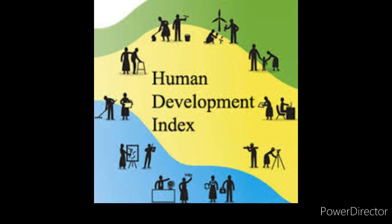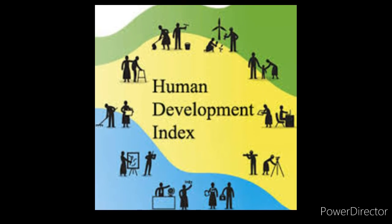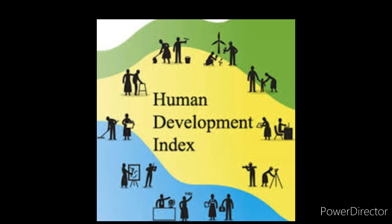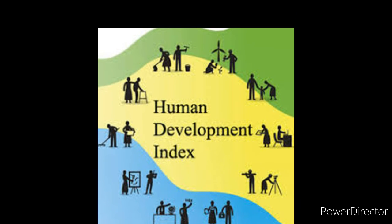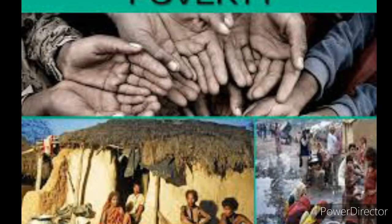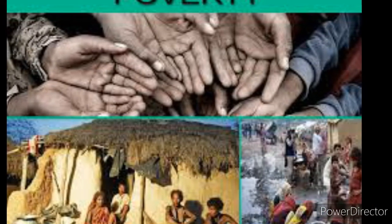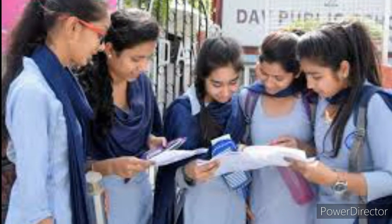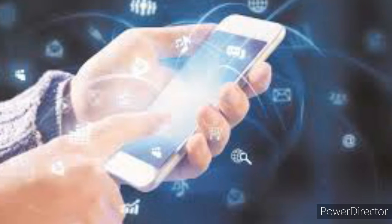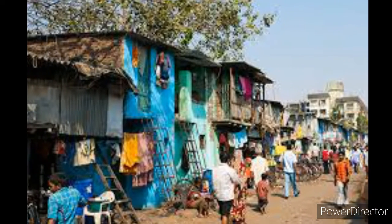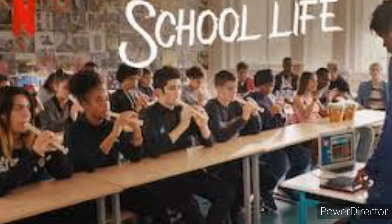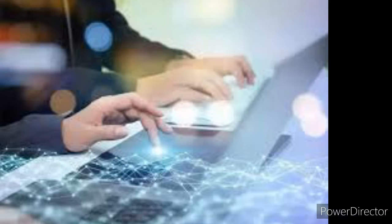India's HDI is 0.718, which is ranked 107th in the world. Japan's HDI is 0.919, ranked 19th in the world. India's poverty rate is 21.9%, school life expectancy is 12 years, and internet users percentage is 29.5%.